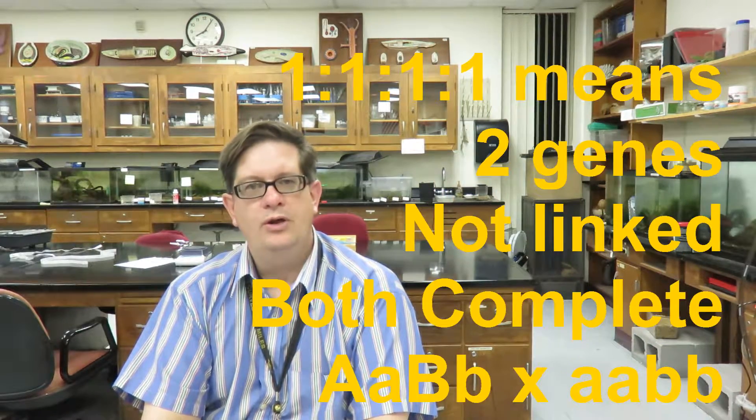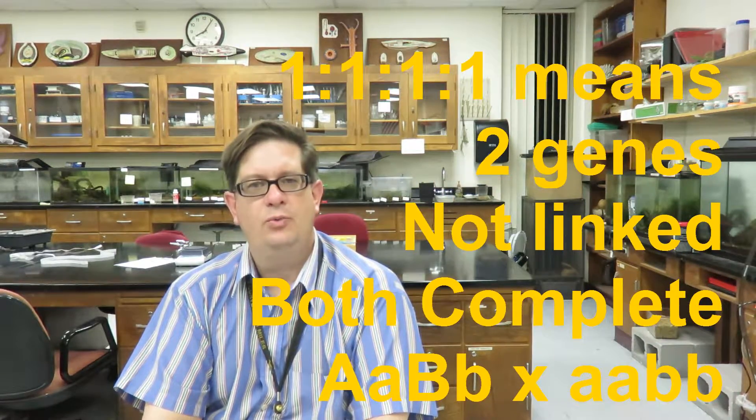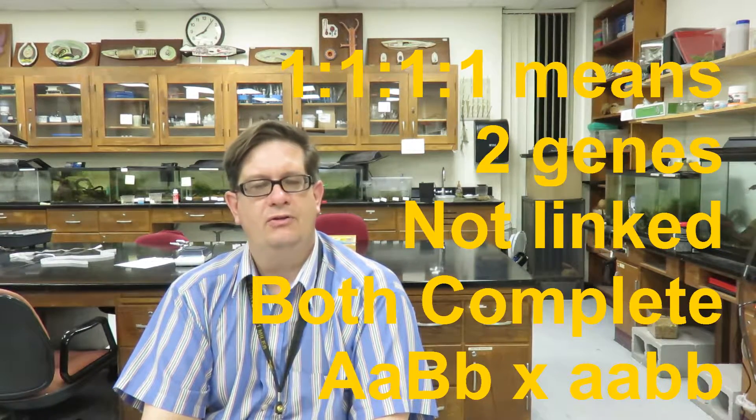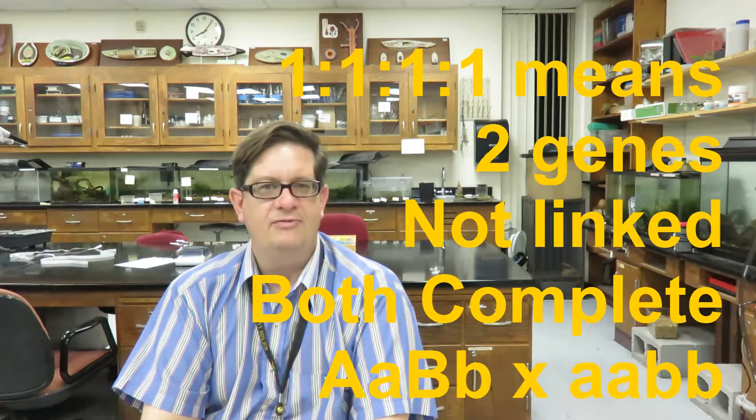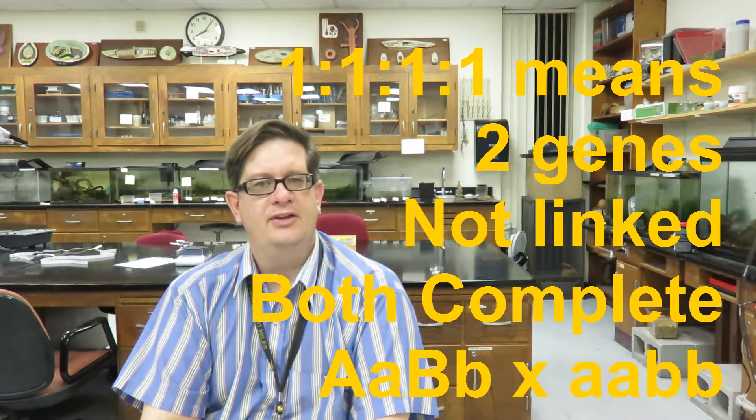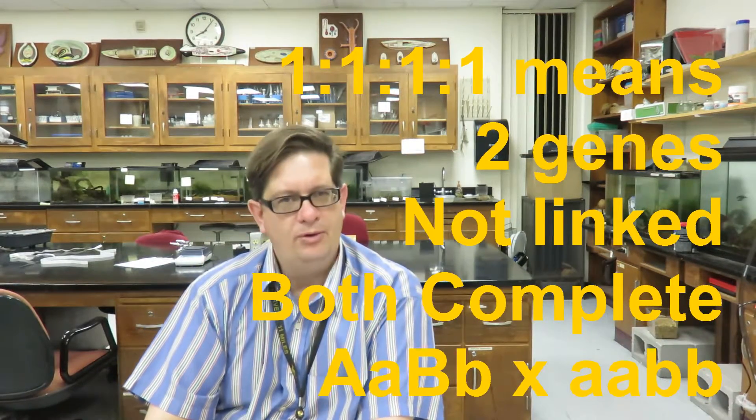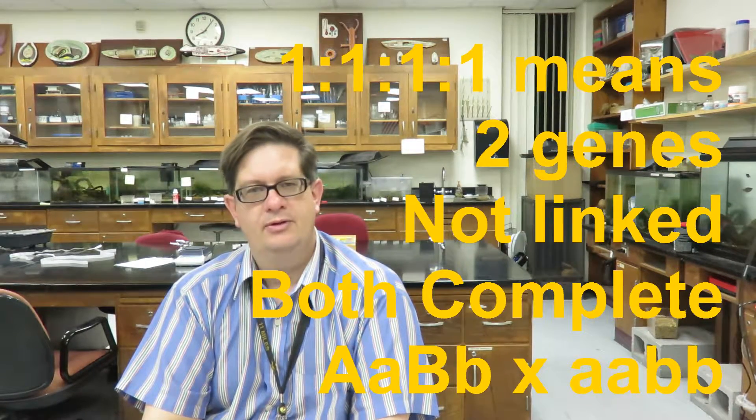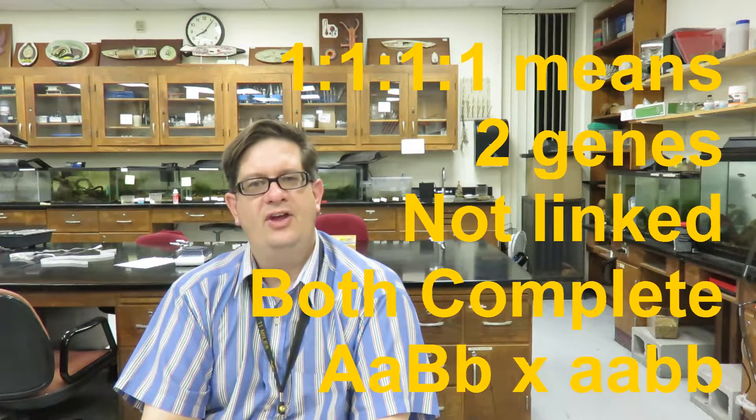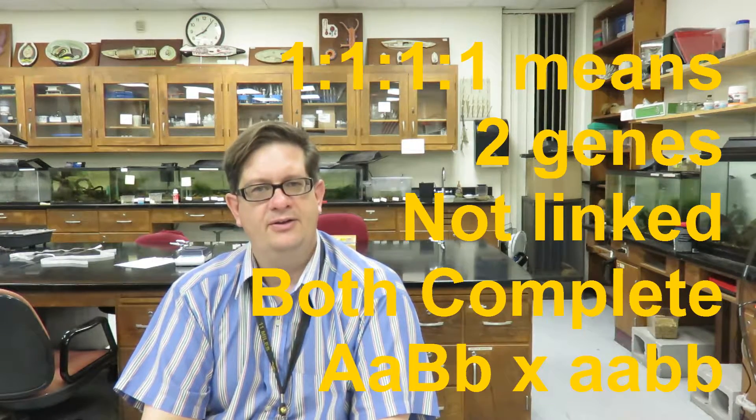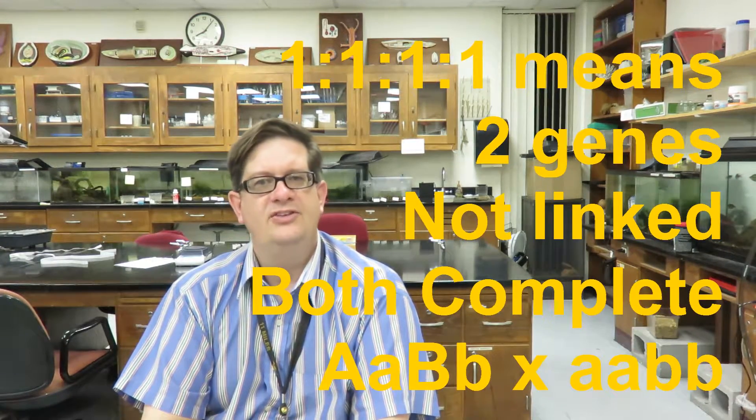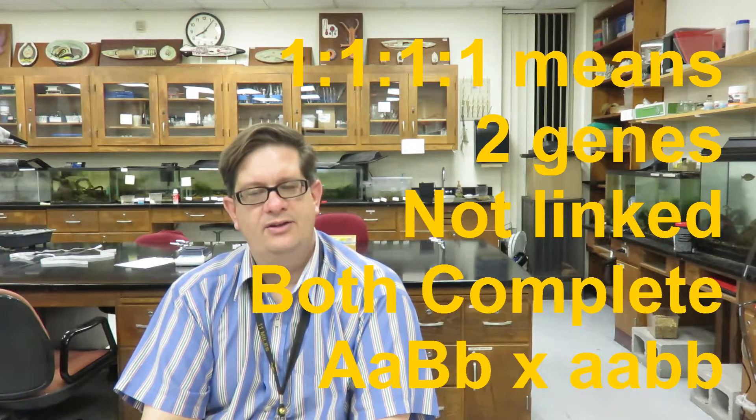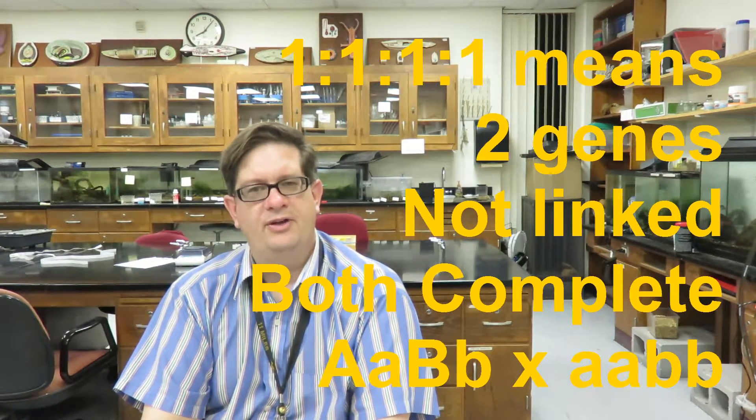If you have a 1 to 1 to 1 to 1 ratio, that means that there are two genes involved. And what you probably have is one parent that is homozygous recessive for both, one parent that is heterozygous for both, that both genes have complete dominance—sorry, that both genes have an allele with complete dominance, and that they are on separate chromosomes.